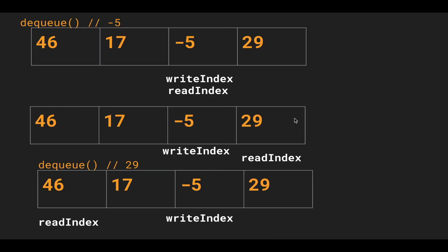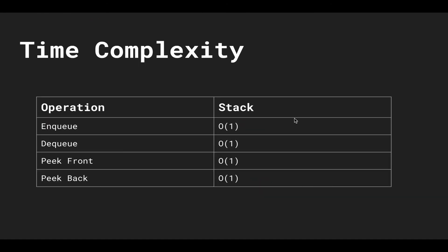That's an overview of how enqueuing and dequeuing work with the circular buffer. Since a circular buffer under the hood uses a linked list, we get the same time complexities as a queue and stack. Enqueue, dequeue, peek front, and peek back are all constant time operations. Keep in mind that circular buffers are similar to stacks and queues in that they are wrappers around list-like data structures like arrays and linked lists, with invariants that control the ordering of insertion and deletion.